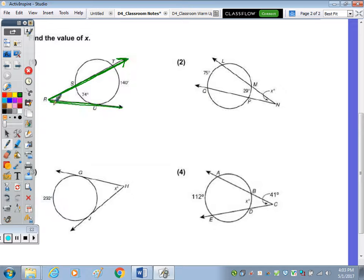In this tangent, it goes with the arcs that are labeled of 144 and 74. So X is equal to half the difference of 140 and 74. Subtract, 140 minus 74 is 66. So half of 66, X is equal to 33.